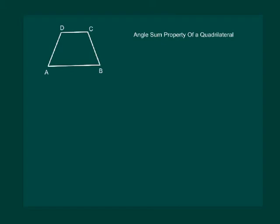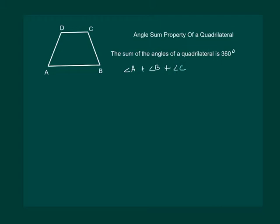Let us also recall the angle sum property of a quadrilateral. It says the sum of the angles of a quadrilateral is 360 degrees. In other words, for quadrilateral ABCD, angle A plus angle B plus angle C plus angle D equals 360 degrees.